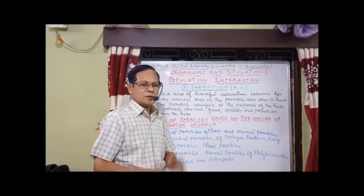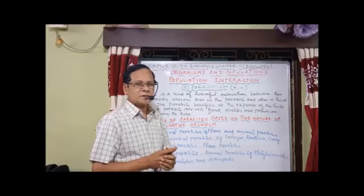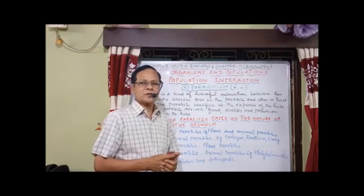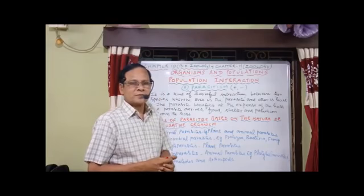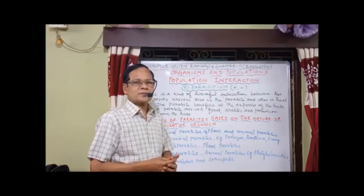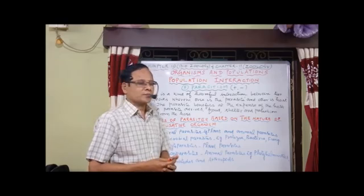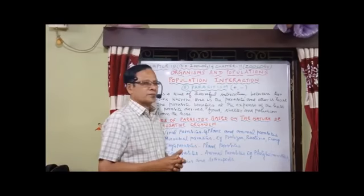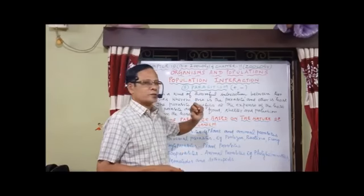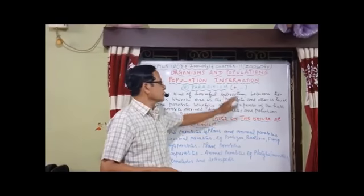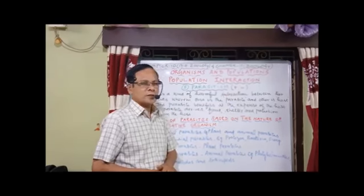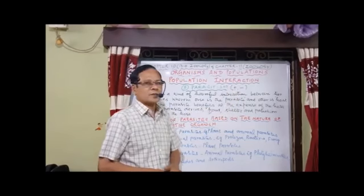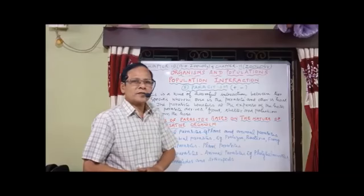That is between different species — inter-specific interactions. In the inter-specific interactions we have studied so far commensalism, mutualism, and also competition. Now the next type of inter-specific interaction is parasitism. Here too there are two species. One is benefited and another one is harmed. That's why we put the symbol plus for one species and minus for another species. So it is one of the harmful interactions.